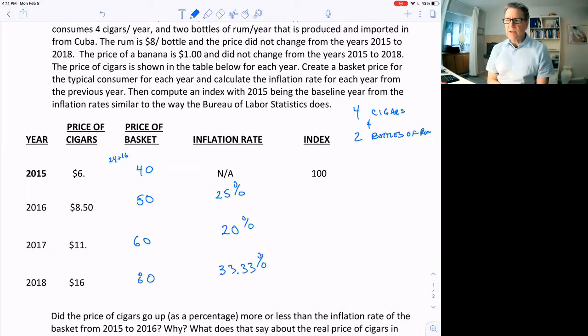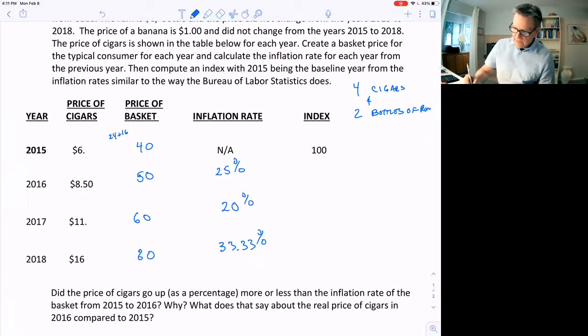The base year is 2015, so the index is set to be 100. And with an inflation rate of 25 in the next year, the index should be 125, then 150 and 200.